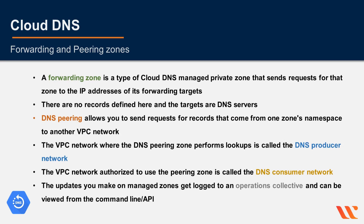A forwarding zone is a type of Cloud DNS managed private zone — it sends requests for that zone to the IP addresses of its forwarding targets. A peering zone is a type of Cloud DNS managed private zone that follows the name resolution order of another VPC network, and this can be used to resolve names that are defined in that other VPC network.